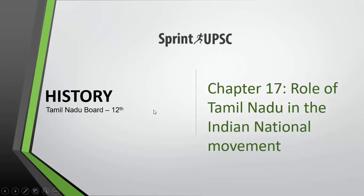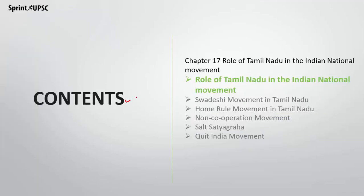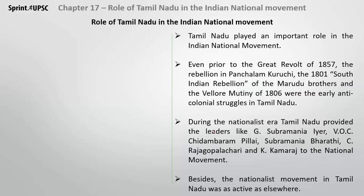Hi and hello everyone, welcome back to Sprint2PSC. We are discussing Class 12th History of Tamil Nadu Board. We are going to start from this session Chapter 17, which is the role of Tamil Nadu in the Indian National Movement. We are going to study the Swadeshi Movement, Home Rule, Non-Cooperation, Salt Satyagraha — all these things going on at national level and what was going on in Tamil Nadu.